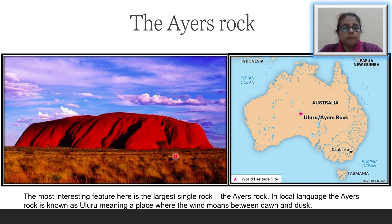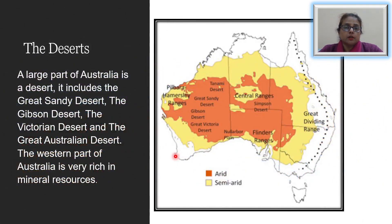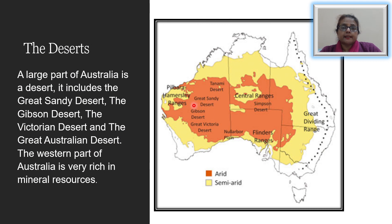Much of the interior of Australia is a great desert. It includes the Great Sandy Desert, the Gibson Desert, the Great Victoria Desert, and the Great Australian Desert.